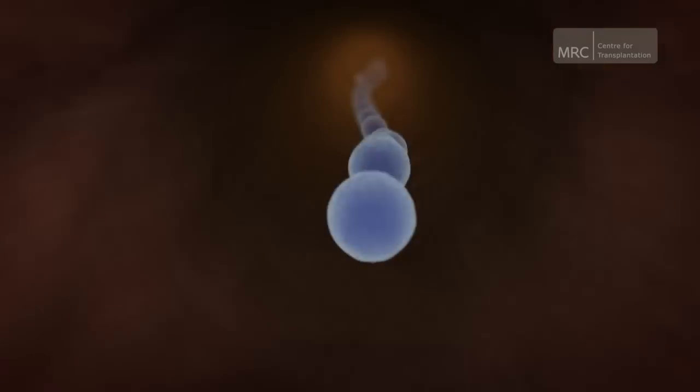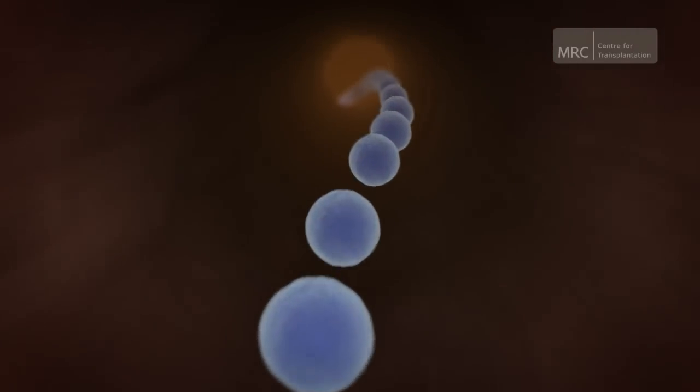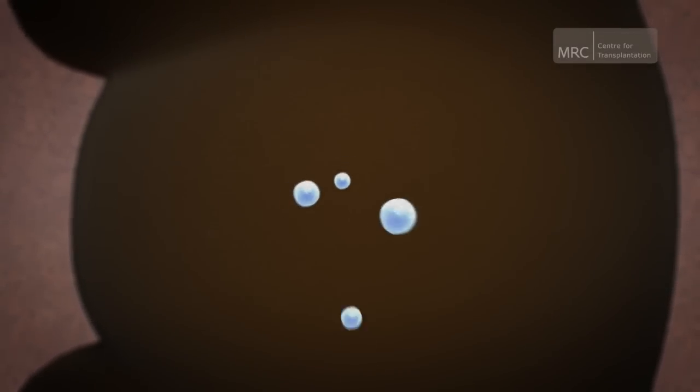Information displayed by the dendritic cells have told the T cells where the intruder can be found. They use the vessels of the body to travel there. T cells attack the kidney and attempt to destroy it as quickly as...